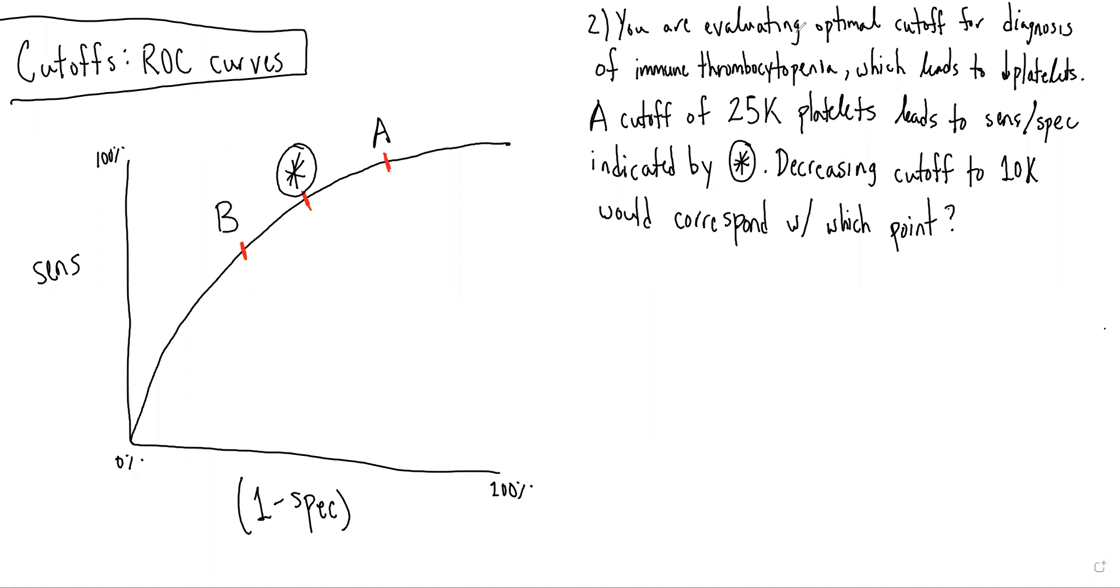So in this case, you're evaluating the optimal cutoff for the diagnosis of immune thrombocytopenia, which leads to a decreased platelet count. A cutoff of 25,000 platelets leads to the sensitivity and specificity indicated by the star. Decreasing the cutoff to 10K would correspond with which point on the ROC curve, A or B?